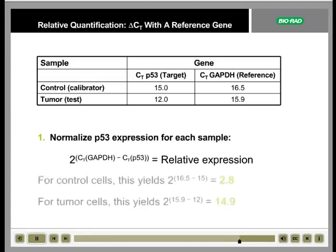For the control cells, this yields a value of 2.8, and for tumor cells, a value of 14.9. These values represent the expression of P53 relative to GAPDH in both samples.